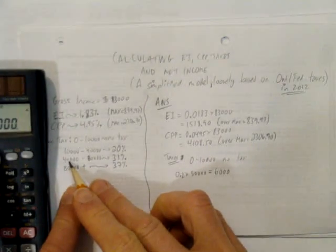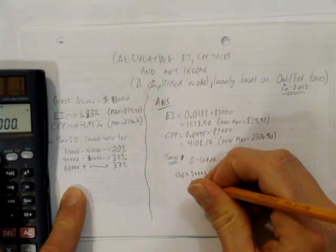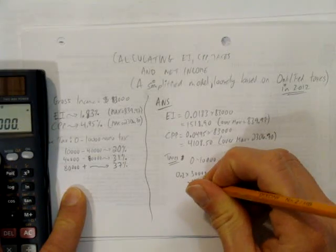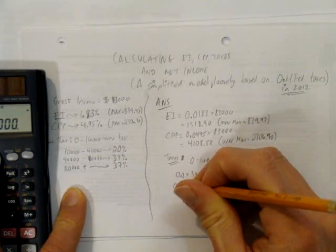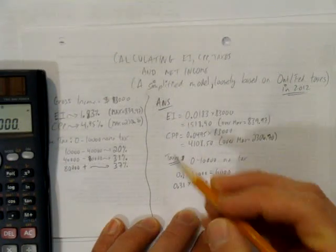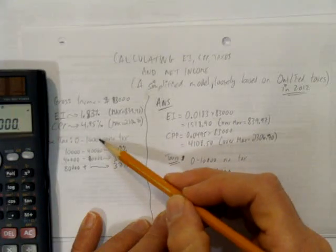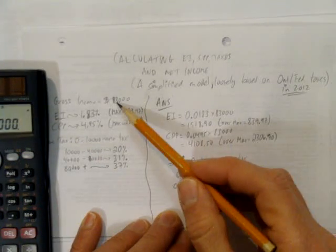Then, between $40,000 and $80,000, how many dollars are there? Another $40,000. And they're going to pay that at 31%, or as a decimal, 0.31. So, what am I doing here? I'm calculating how much tax they pay in each tax bracket. Remember, they're getting paid $83,000, but that first $10,000 isn't taxed at all.